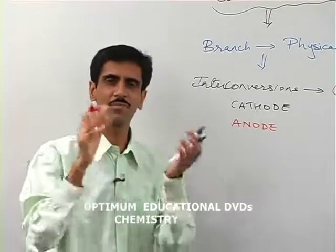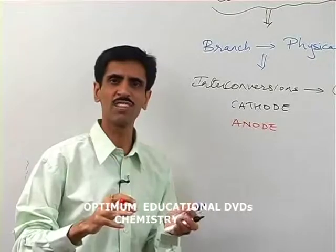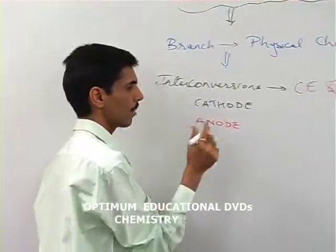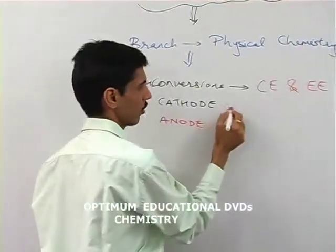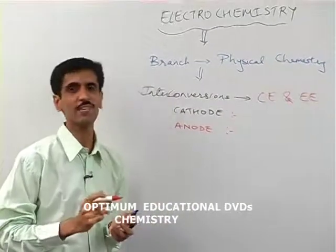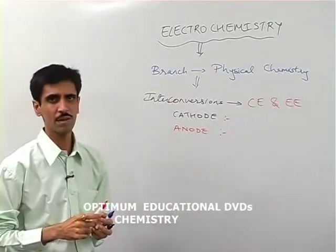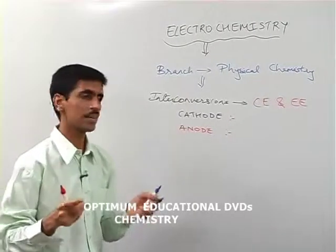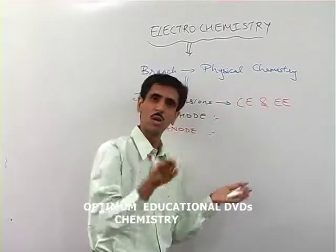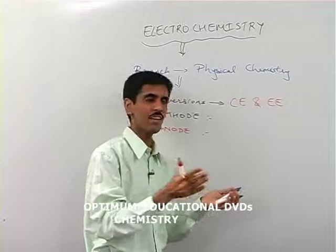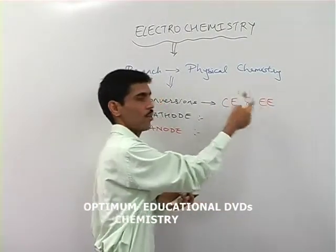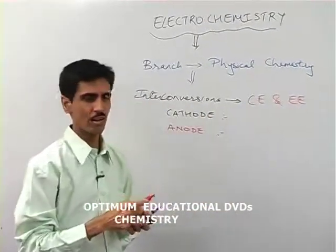These electrodes behave as a medium for a reaction to take place — that means they allow substances to get deposited or evolved. At the cathode and at the anode, two types of reactions take place. This applies to electrochemistry as a whole, whether we are going from chemical energy to electrical energy or vice versa.